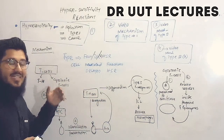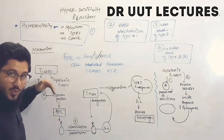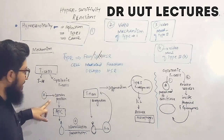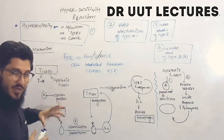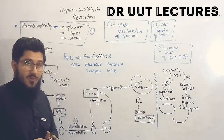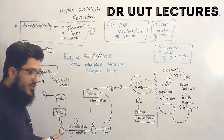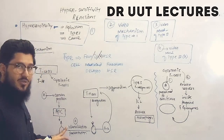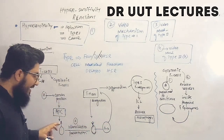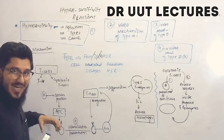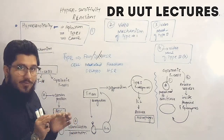First, the antigen cannot enter the body directly — it needs a carrier protein to go from outside to inside. So it takes the help of a carrier protein to enter the body. Inside the body, antigen presenting cells are waiting for this antigen. The antigen is taken up by the antigen presenting cell, which first does internalization — meaning it internalizes the antigen inside itself.